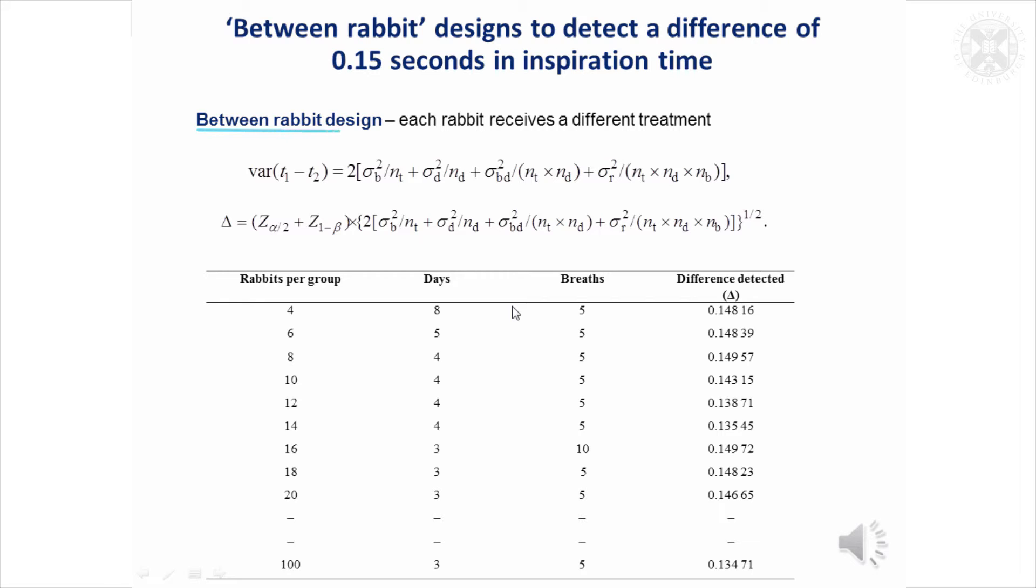First of all, assume we're going to do a between-rabbit trial where each rabbit is allocated to a different treatment, so they only have one treatment each. It's possible to use this in a sample size formula. If we can rearrange a sample size formula to see what size of difference can be detected for a given power and amounts of variability. Don't worry too much about understanding these formulae. I really just wanted to illustrate that you can use simulation to see how many rabbits per group you're going to need and how many days to achieve a study with sufficient power to detect a difference of 0.15 seconds.